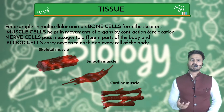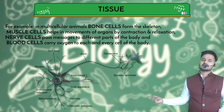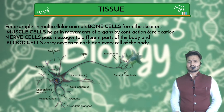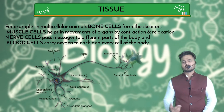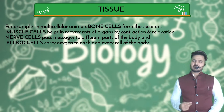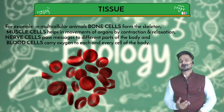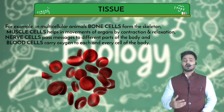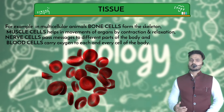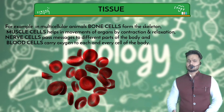Another example is contraction and relaxation. We also have nerve cells, which are responsible for sending chemical messages from one part of the body to another. Lastly, blood cells are important for carrying oxygen. When blood carries oxygen, we call it oxyhemoglobin, which we will study in detail later.